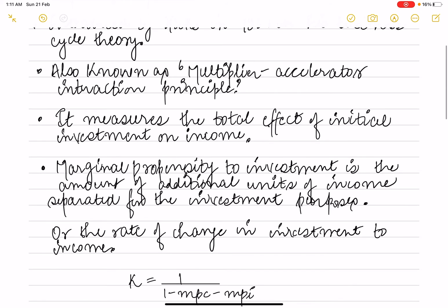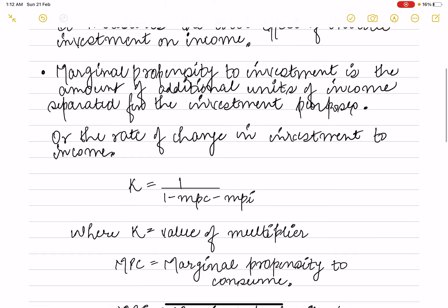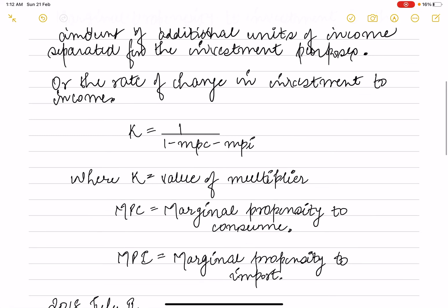Here we look at marginal propensity to investment, which is basically the amount of additional units of income generated for investment purposes, or the rate of change in investment to income. K is the value of the multiplier.